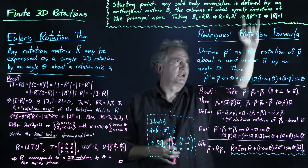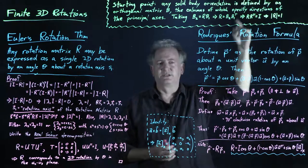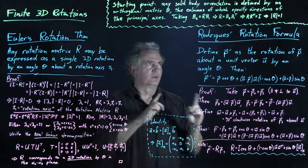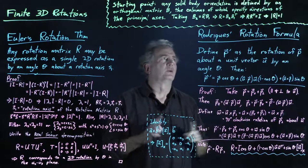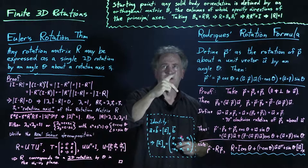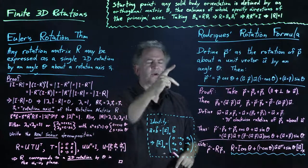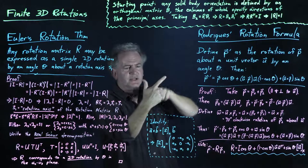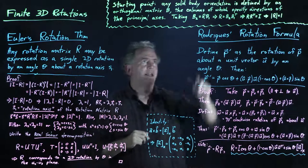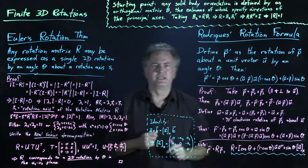The determinant of a product equals the product of the determinants, and the determinant of Rᵀ equals the determinant of R, so det(R)² = 1, meaning det(R) = ±1. We're going to consider the case where det(R) = 1, since we're considering the basis matrix B as a right-handed matrix. As we go from one orientation to another, the three columns of B remain right-handed, so det(B1) = det(B2) = 1, and therefore det(R) = 1.